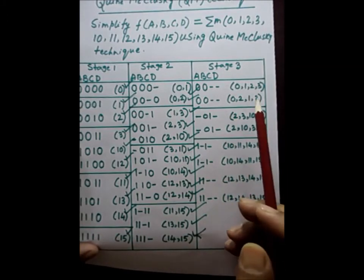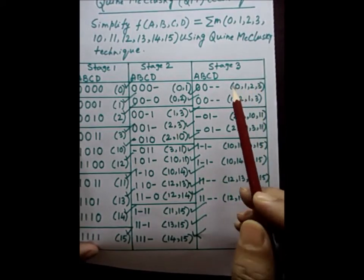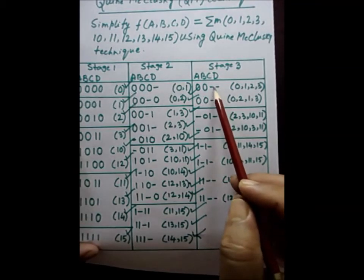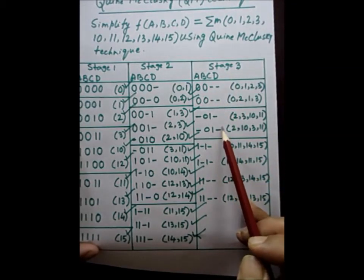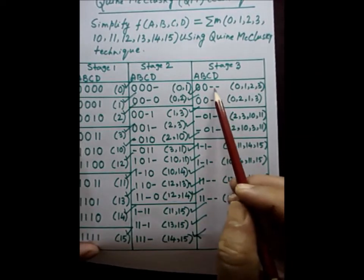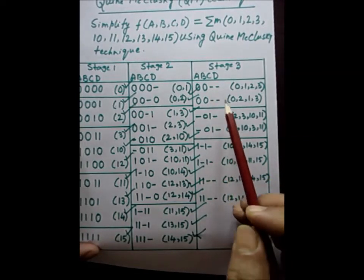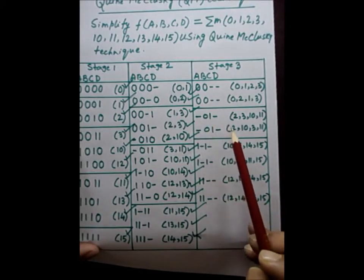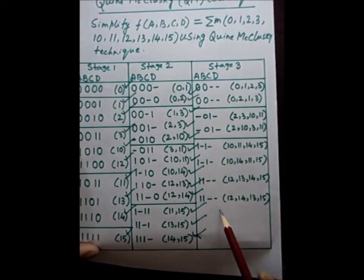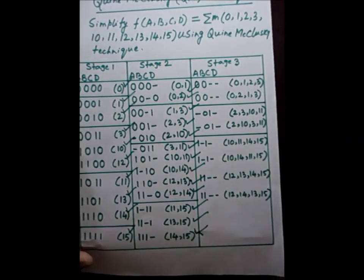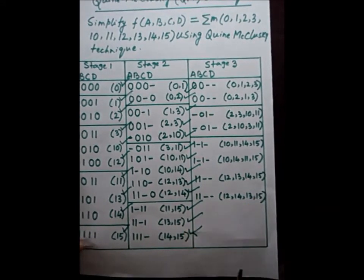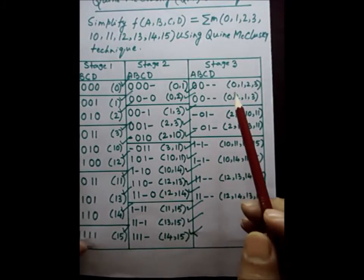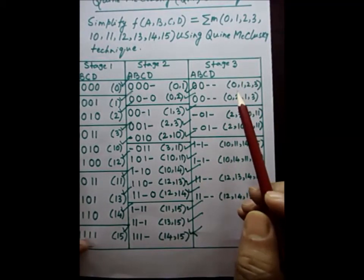Now we attempt to go from stage 3 to stage 4. In the first group of stage 3, there are no entries with two dashes, so no valid matching is possible. The last group also has no matching dash pattern. The second and third groups similarly have no valid matches. Therefore the process stops at stage 3.